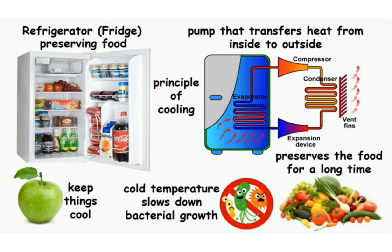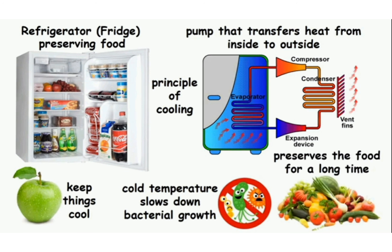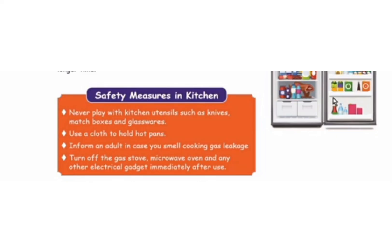The cold temperature inside the fridge slows down bacterial growth in food and thus preserves the food for a longer time. Safety measures in the kitchen: never play with kitchen utensils such as knives, matchboxes and glassware. Use a cloth to hold hot pans. Inform an adult in case you smell cooking gas leakage. Turn off the gas stove, microwave oven and any other electrical gadgets immediately after use.